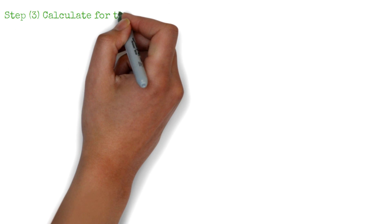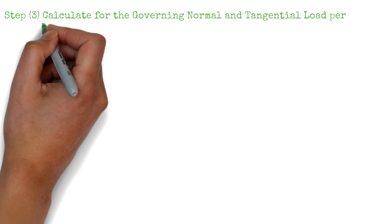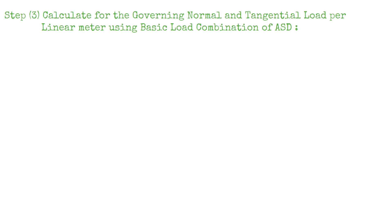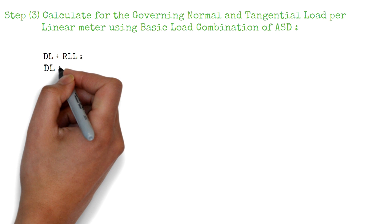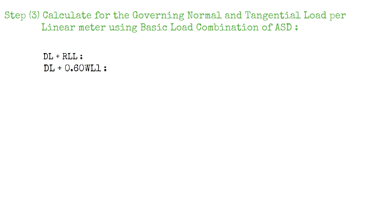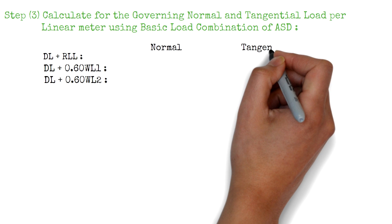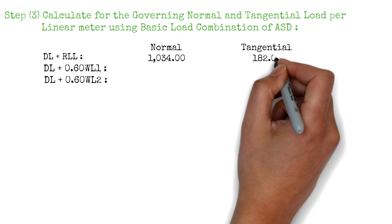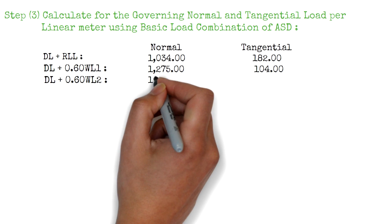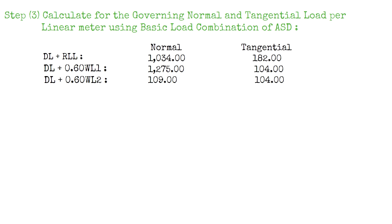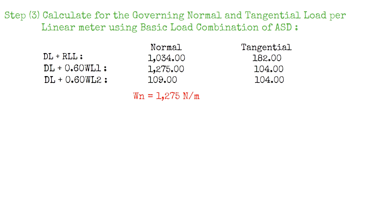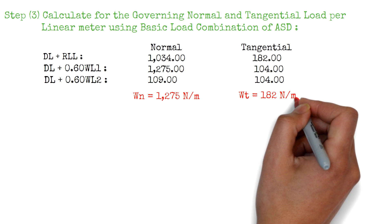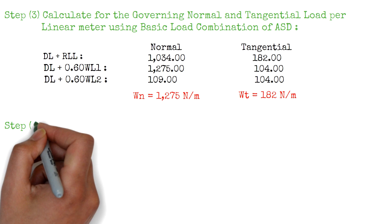The third step is to determine the governing normal and tangential load per linear meter using the basic load combination for allowable strength design. Our first load combination is dead load plus roof live load. Second is dead load plus 0.6 of wind load 1, and the last is dead load plus 0.6 of wind load 2. The governing normal load per linear meter is 1275 N/m and the governing tangential load per linear meter is 182 N/m.